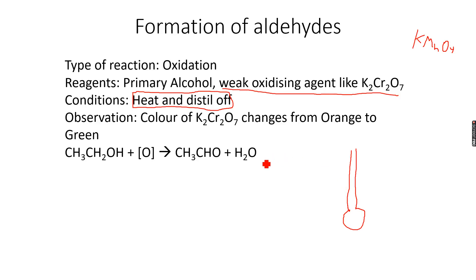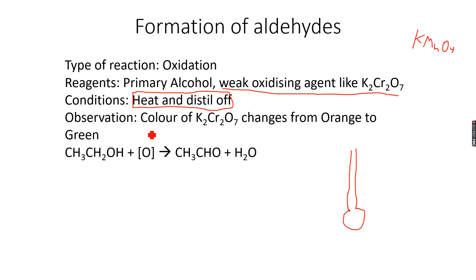When you distill off, you get an aldehyde, and when you heat under reflux, you get a carboxylic acid. That's the difference. So as we are using K2Cr2O7, which is potassium dichromate in this example, the observation we will get — and this is very important because they often ask this in the paper — is a color change from orange to green.